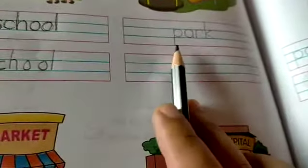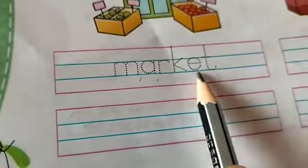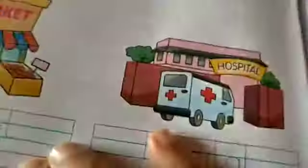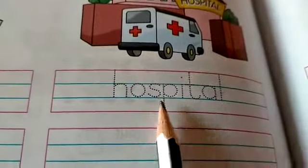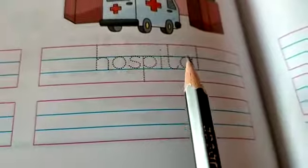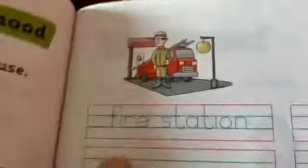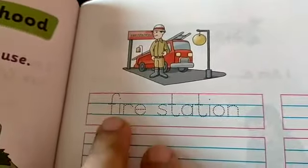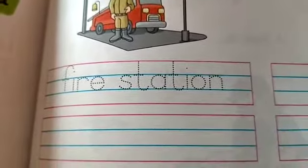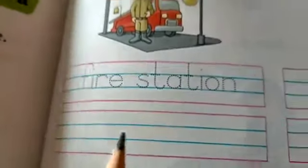Trace the word market and write in this column. Hospital — H-O-S-P-I-T-A-L, hospital. Trace the word hospital and then write in this column. Next one is fire station — F-I-R-E, fire, S-T-A-T-I-O-N, fire station. Trace the word fire station and write in this column.